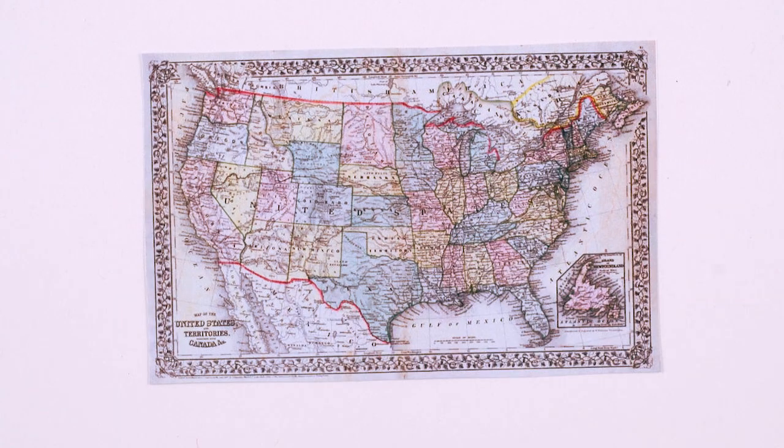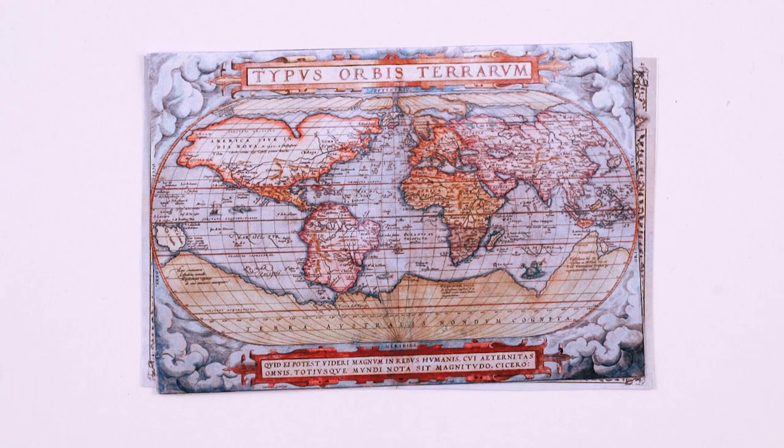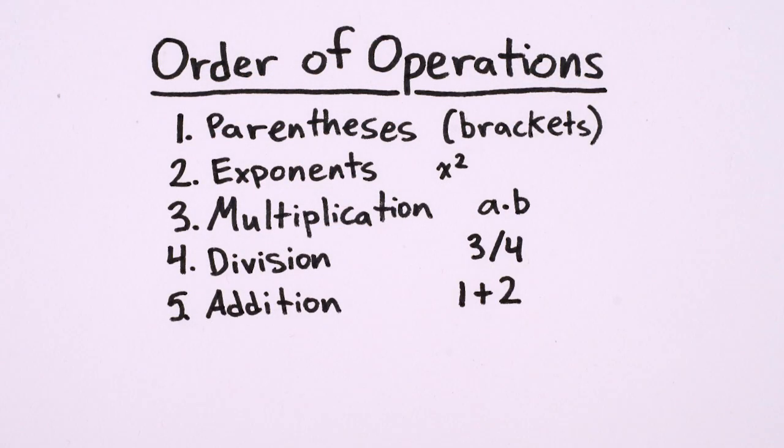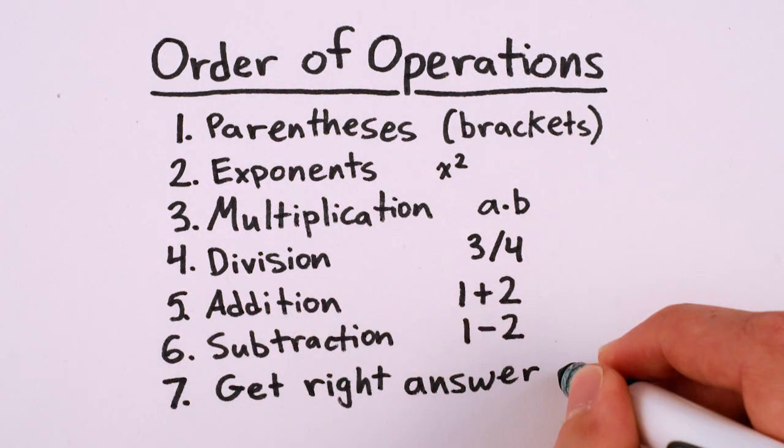If you went to elementary school in the US, or much of the rest of the world, you almost certainly learned about something boringly called the order of operations, a set of rules for whether or not you should do multiplication before addition or addition before subtraction to get the right answer on your math test.